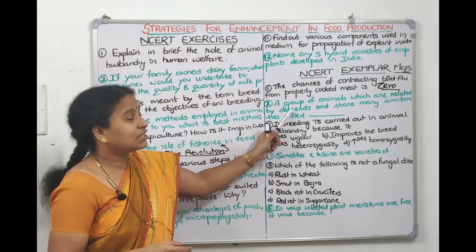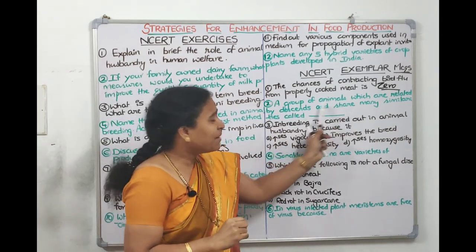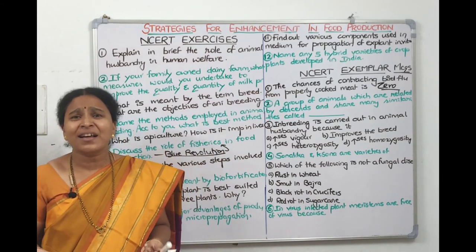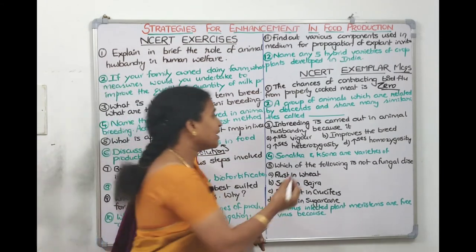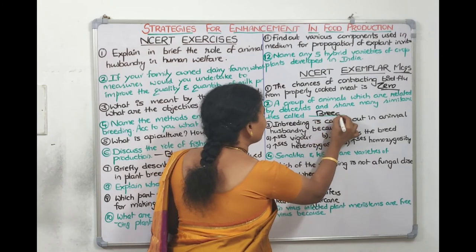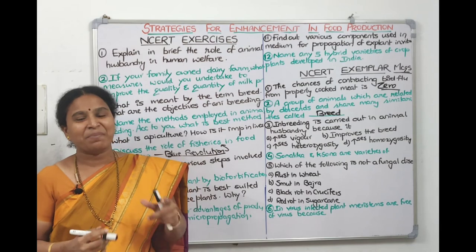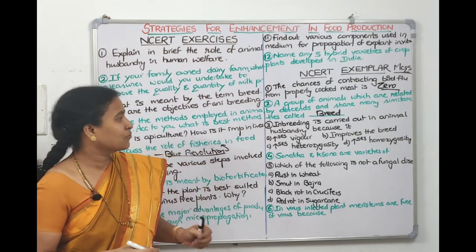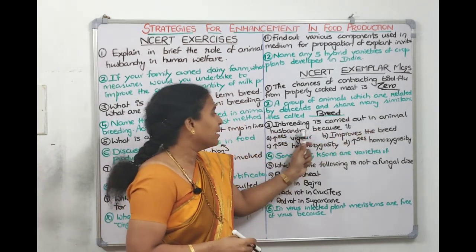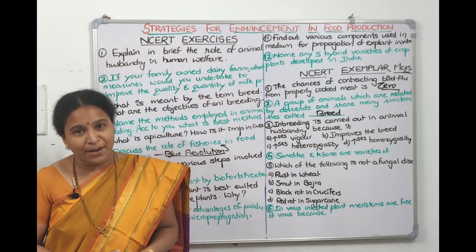Second exemplar question: a group of animals related by descent from a common ancestor, sharing similarities like form, size, and configuration — what are they called? The answer is 'breed.'